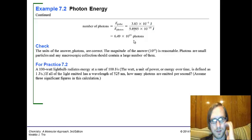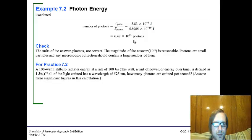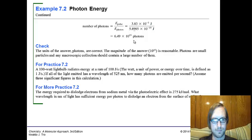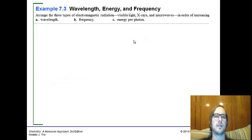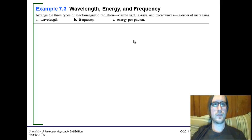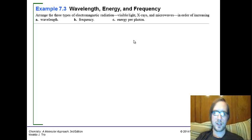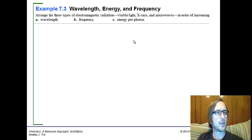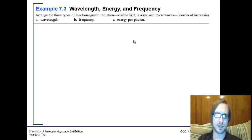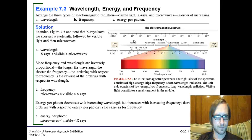There's another practice problem very similar for you to try. All right, Example 7.3, wavelength, energy, and frequency. Arrange the three types of electromagnetic radiation—visible light, X-rays, and microwaves—in order of increasing wavelength and frequency and energy per photon. We only picked out three. Remember, we can label radio, gamma, ultraviolet, infrared, there's all kinds. We just have to understand what means what.